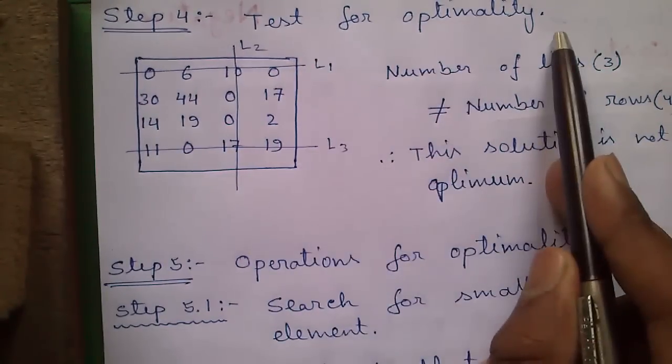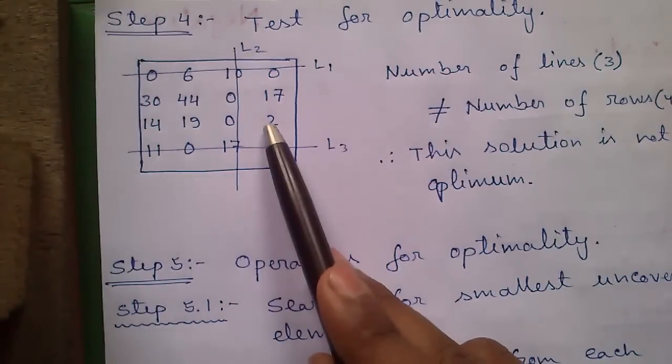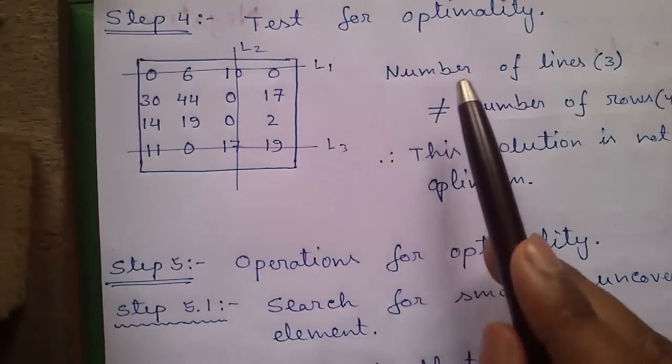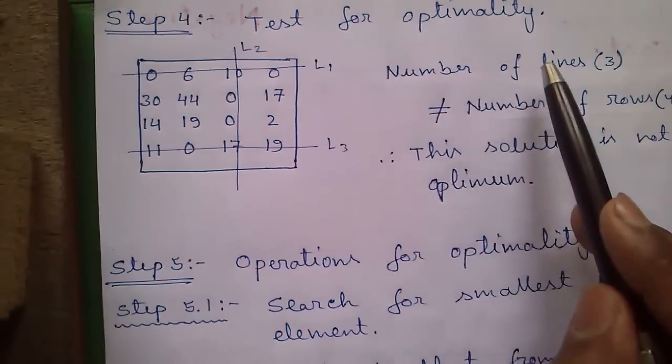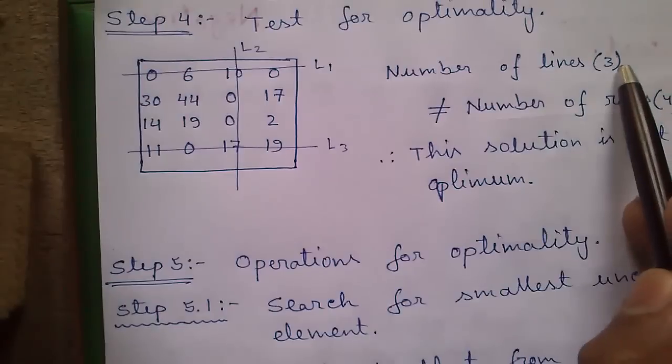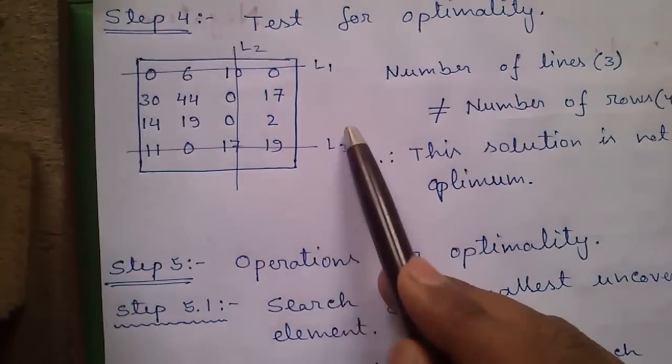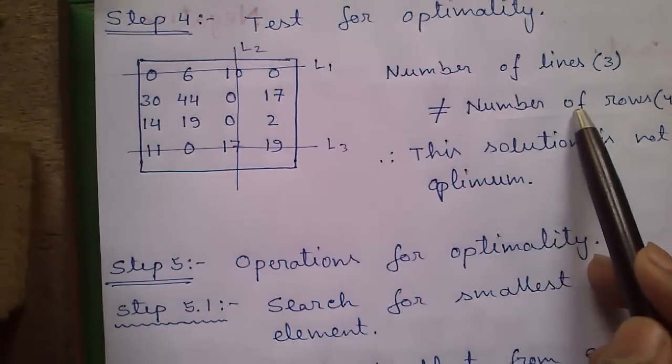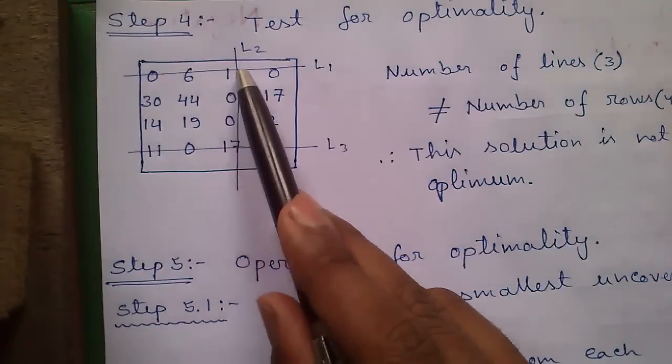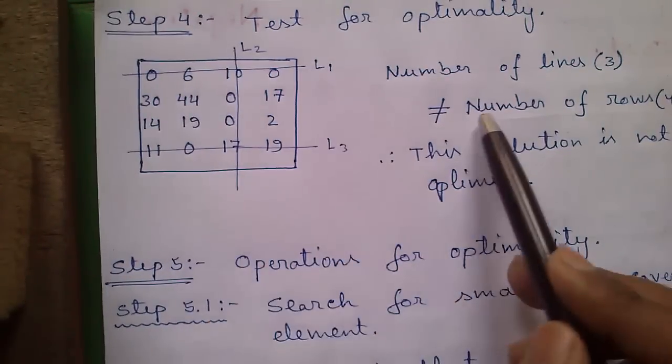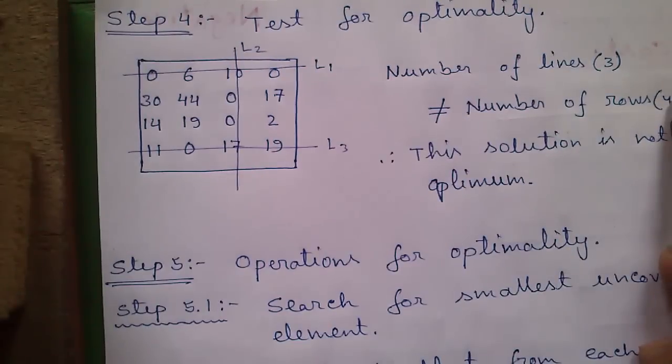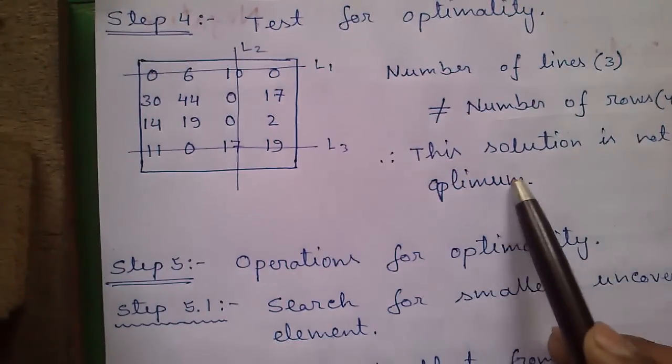Step 4: Test for optimality. We will check whether the number of lines drawn here, 3 lines, equals the number of rows. Here lines are 3, rows are 4. So number of lines are not equal to number of rows. This solution is not optimum.